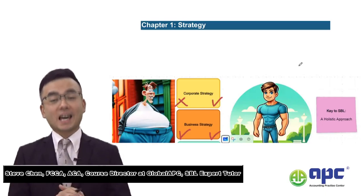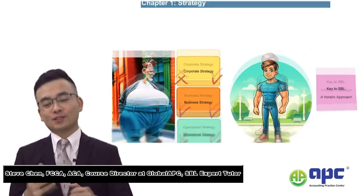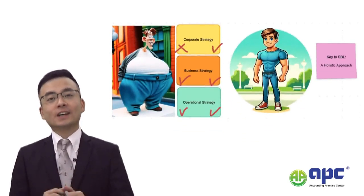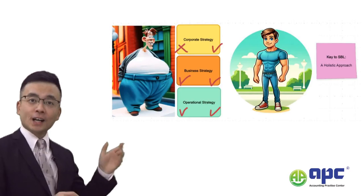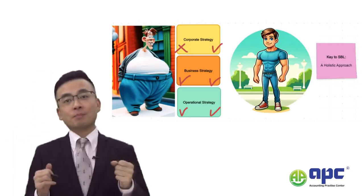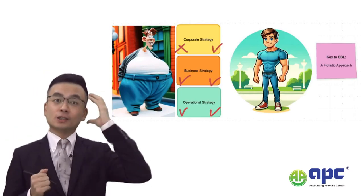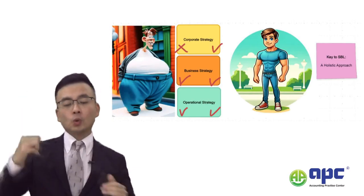Welcome to the SPL Summary. Let's go through the Chapter 1 strategy. As you can see in the picture here, it's important that we distinguish the soul and muscle.